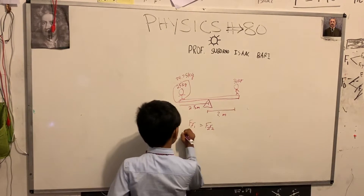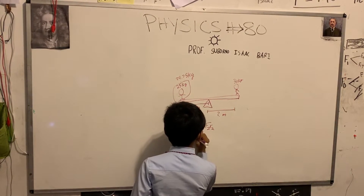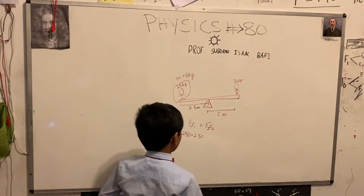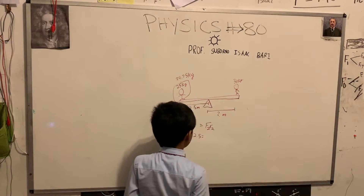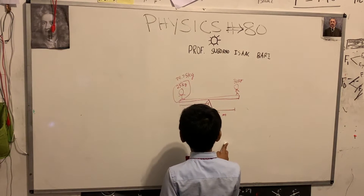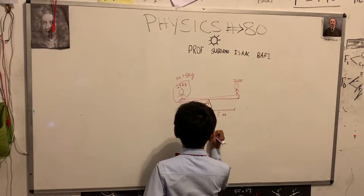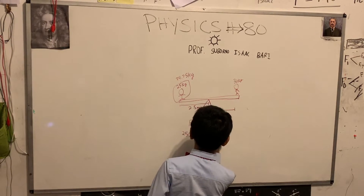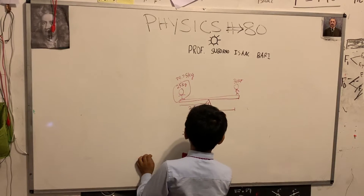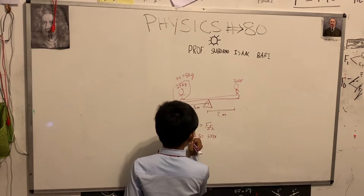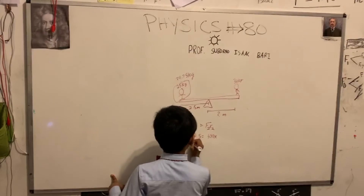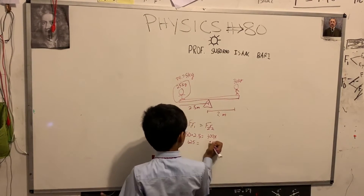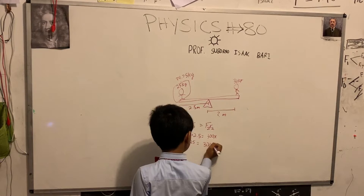So 250 times 2.5... And then F2·R2 is going to be 30 times 10, which is 300x. So 250 times 2.5 is going to be equal to 625, and that will be equal to 300x.